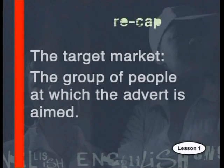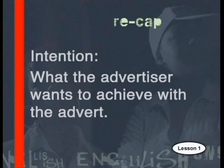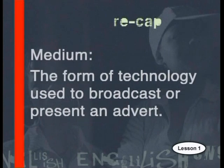Thanks, Lusanda, for giving us an example of how the intention, medium and target audience of an advert all work together to send a message. Let's revise what these terms mean. The target market for an advertisement is the group of people at which the advert is aimed. The intention in advertising refers to what the advertiser wants to achieve with the advert. The medium is the form of technology used to broadcast or present an advert.